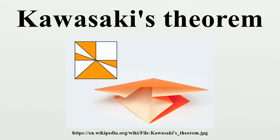Suppose that a crease pattern consists of an even number 2N of creases radiating from a single vertex V, without specification of which creases should be mountain folds and which should be valley folds. In this crease pattern, let α1, α2, … α2N be the consecutive angles between the creases around V, in clockwise order, starting at any one of the angles. Then Kawasaki's theorem states that the crease pattern may be folded flat if and only if the alternating sum and difference of the angles adds to 0: α1 − α2 + α3 − … + α2N−1 − α2N = 0, and the sum of the angles in either of the two subsets is exactly 180 degrees.